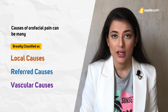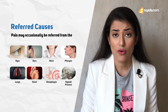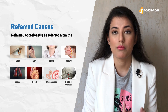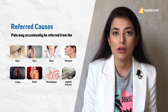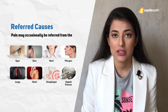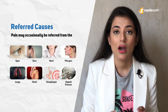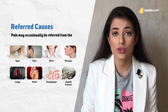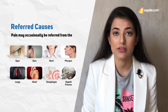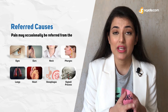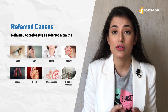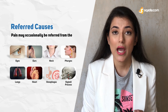Next are the referred causes. These include pain from the eyes such as glaucoma, ear such as middle ear disease, neck such as cervical vertebral diseases, pharynx such as carcinoma of the pharynx, lung such as lung cancer, heart such as angina, esophagus such as esophagitis, and lastly the styloid process such as Eagle syndrome. Eagle syndrome is a rare disorder in which the styloid process elongates, causing pain upon chewing, swallowing, and turning of the head.